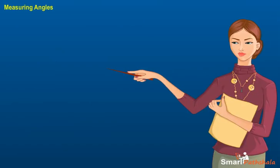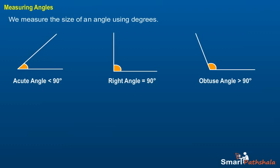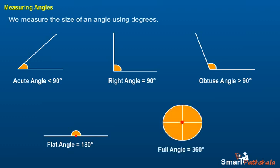Measuring Angles. We measure the size of an angle using degrees. Acute angle is less than 90 degrees. Right angle is equal to 90 degrees. Obtuse angle is greater than 90 degrees. Flat angle is equal to 180 degrees. Whole angle is equal to 360 degrees.